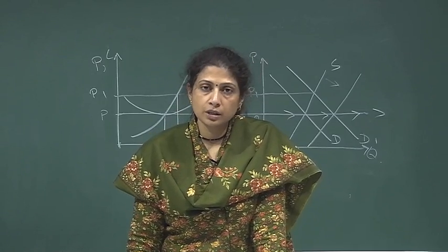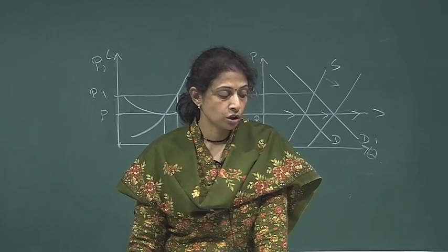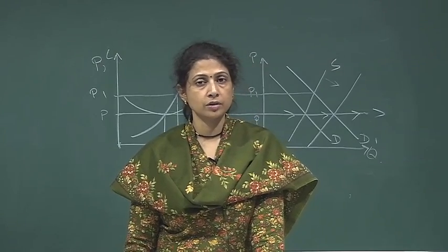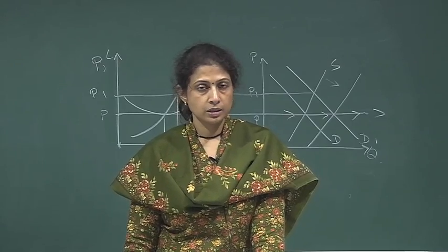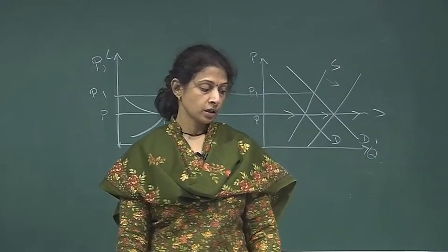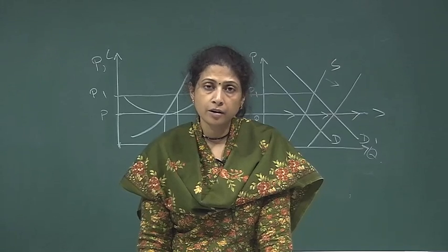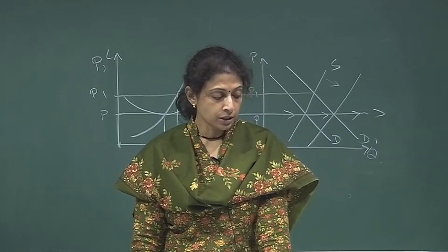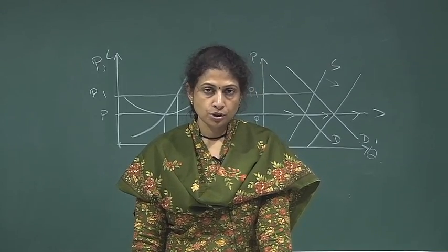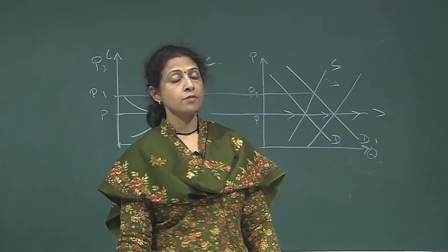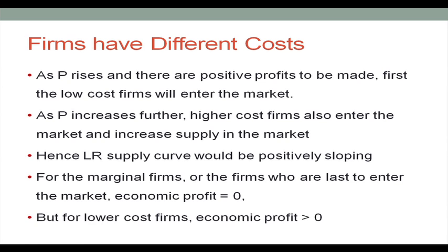Since costs are also increasing as higher cost firms enter the market, on one hand costs are increasing but on the other hand the quantity supplied is also increasing, giving us a positively sloping supply curve. For the marginal firms — the firms last to enter, who have higher costs — the economic profit is equal to zero. But for more efficient lower cost firms they can manage to continue to have positive economic profit. So lower cost firms' economic profit may be greater than zero.